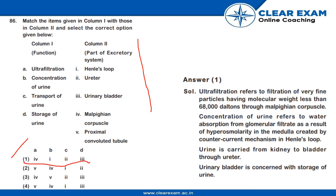Concentration of urine refers to water absorption from glomerular filtrate as a result of hyperosmotic activity in the medulla, created by the counter-current mechanism in Henle's loop. Urine is carried from the kidney to the bladder through the ureter.